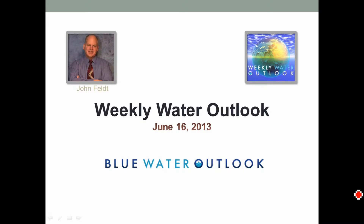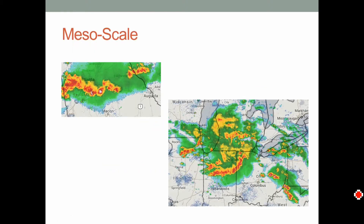For June 16th from Blue Water Outlook. We're getting into that time of year when precipitation is much more mesoscale based. Rather than widespread synoptic-type or large-scale patterns, we're seeing much smaller scale patterns that are very hard to predict in advance — very hard to predict the amount of rainfall.